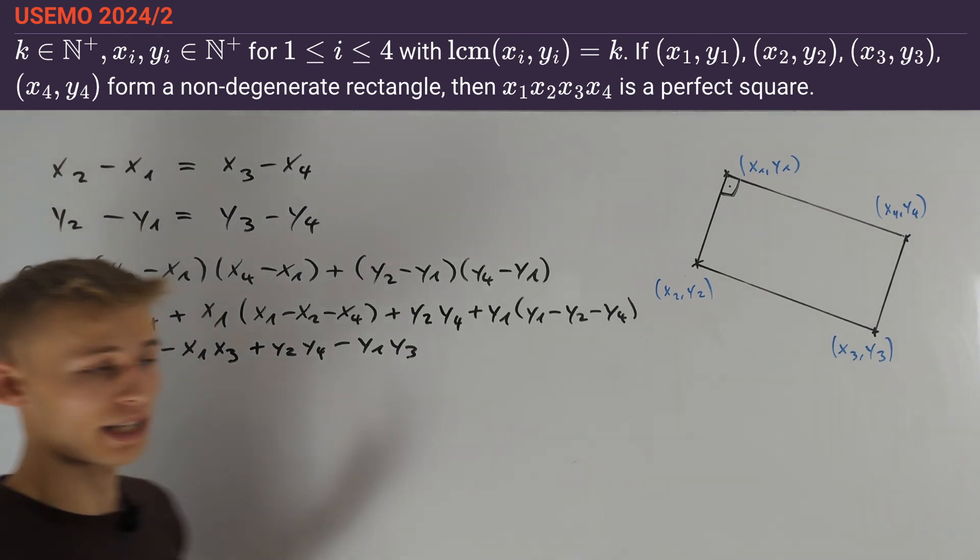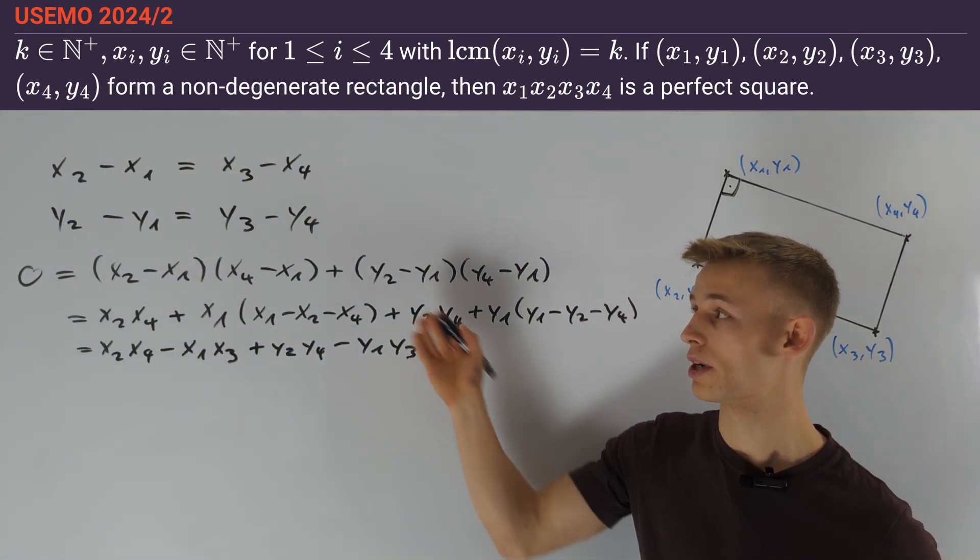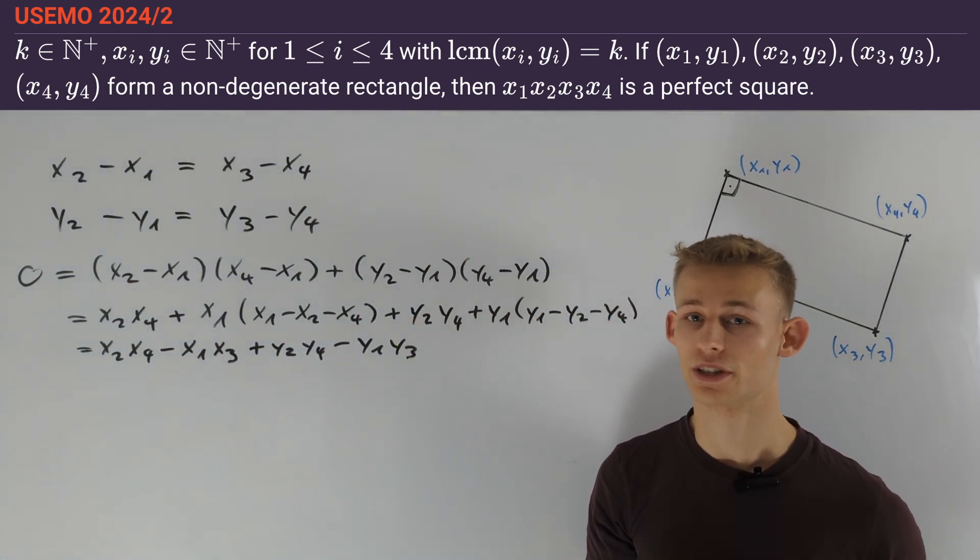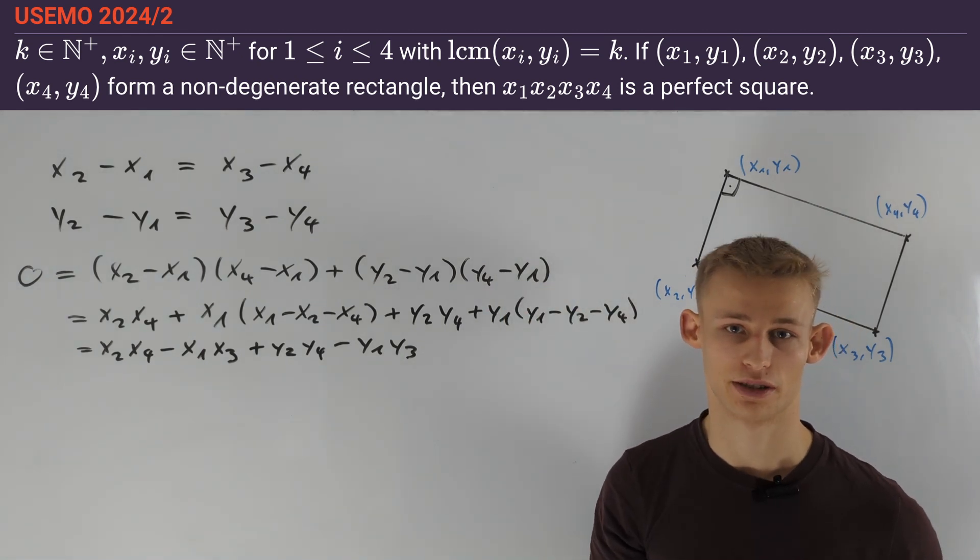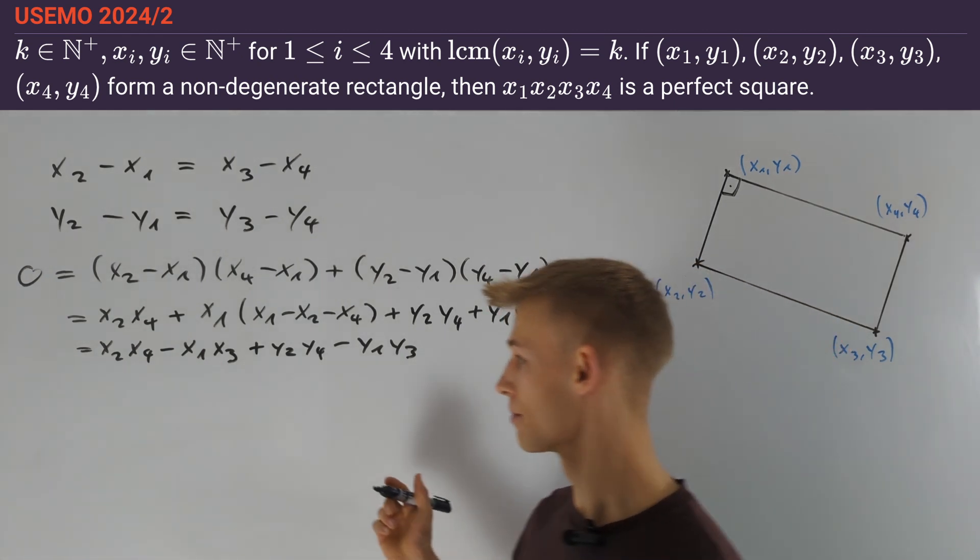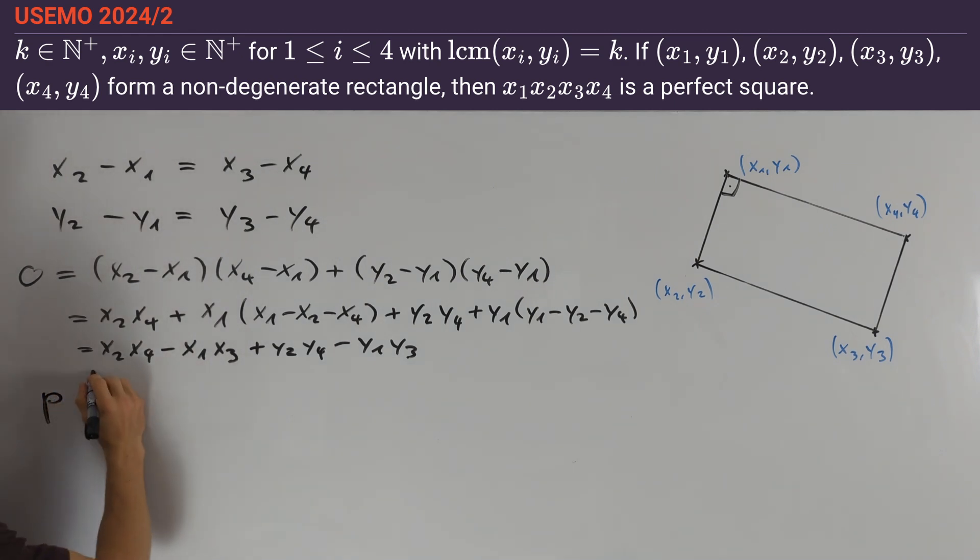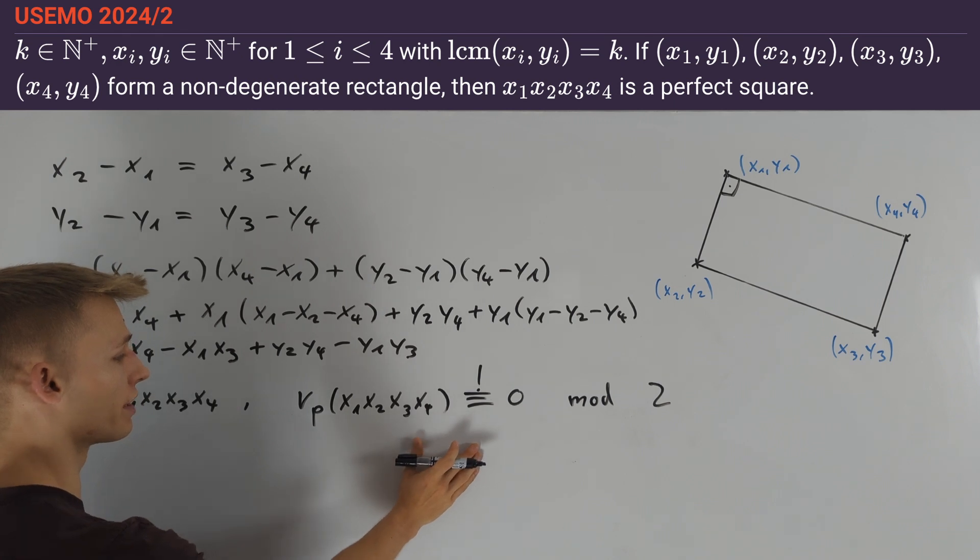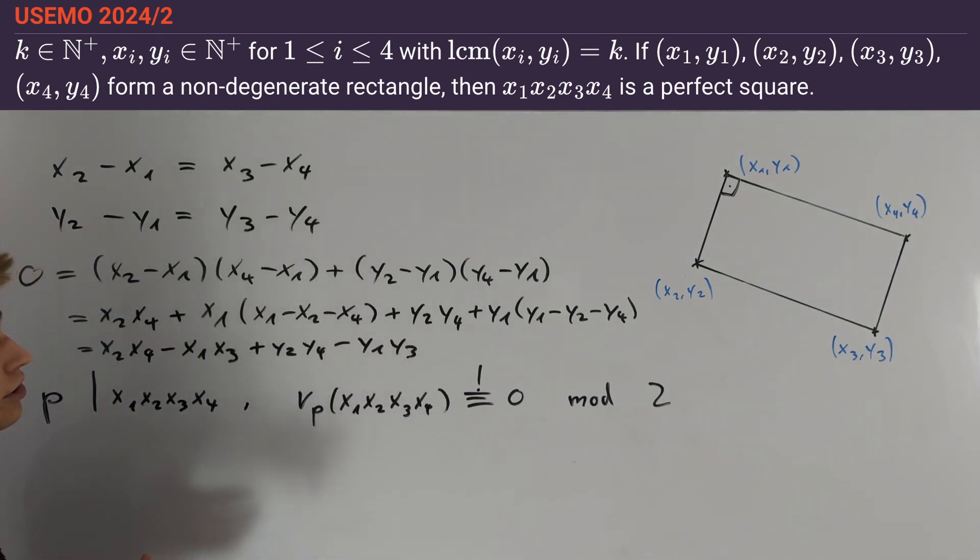We now got all information out of the problem statement into equations and can start proving that the product of the xi's is a perfect square. Let's consider a prime number p that divides x1x2x3x4. We want to prove that nu_p of this product is an even number. To prove this we'll use the fact that the least common multiple of xi, yi is always equal to k.